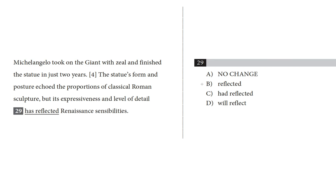Our choices are all different forms of that same verb. Choice A is no change — that's 'has reflected.' Choice B is 'reflected.' Choice C is 'had reflected.' And choice D is 'will reflect.'